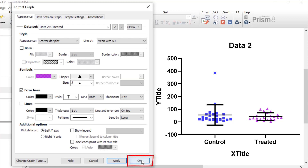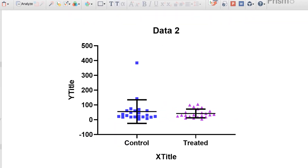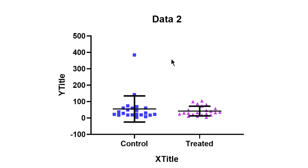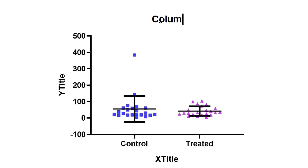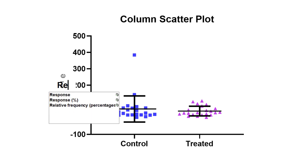I'm happy with this and I'll click OK to return to the graph. Let's start off by giving the graph a title — 'column scatterplot' — and I'll delete the x-axis title since I don't really need that. I'll also give the y-axis a title and call it 'response'.